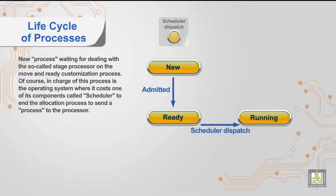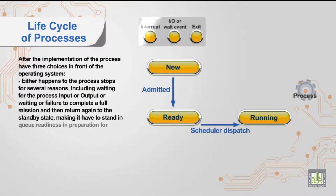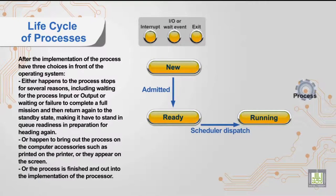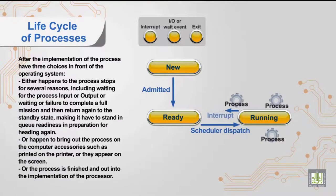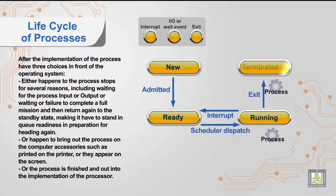After the implementation of the process, the operating system has three choices. Either the process stops for several reasons, including waiting for input or output, general waiting, or failure to complete a full task.